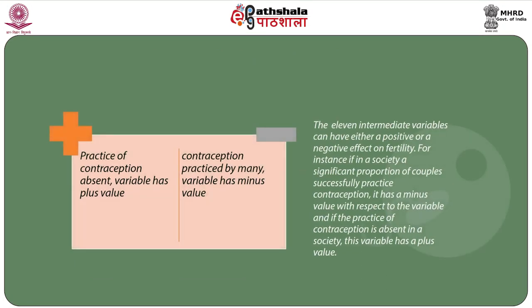The above listed 11 intermediate variables can have either a positive or a negative effect on fertility. For instance, if in a society a significant proportion of couples successfully practice contraception, it has a minus value with respect to that variable. If the practice of contraception is absent in a society, this variable has a plus value. The fertility level in any society is determined by the combined effect of all these 11 variables, and each one can operate to reduce or to enhance fertility.